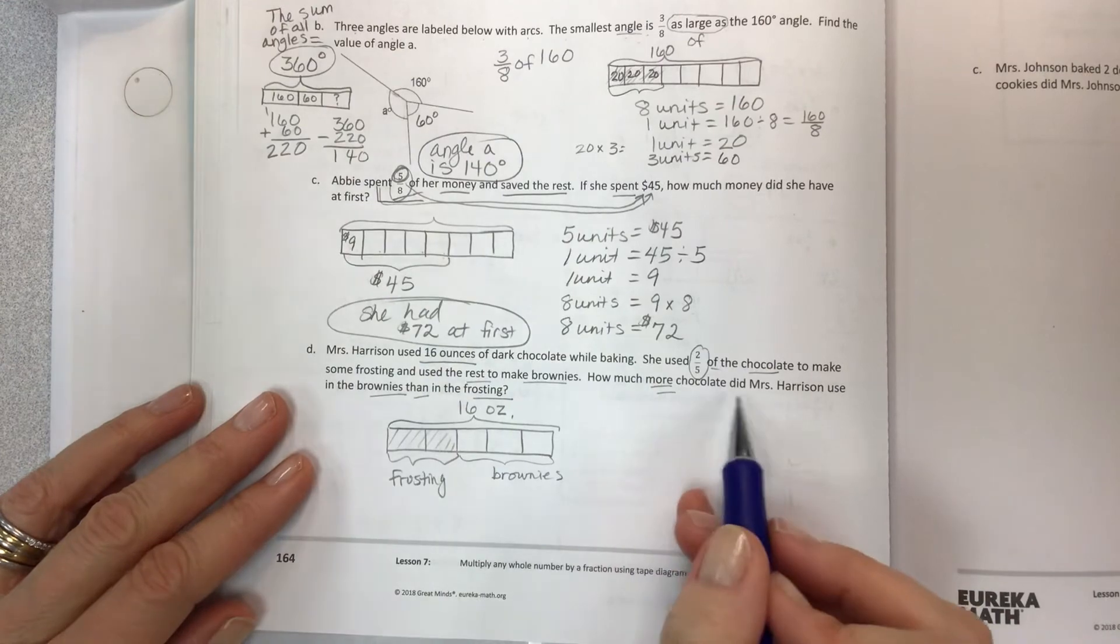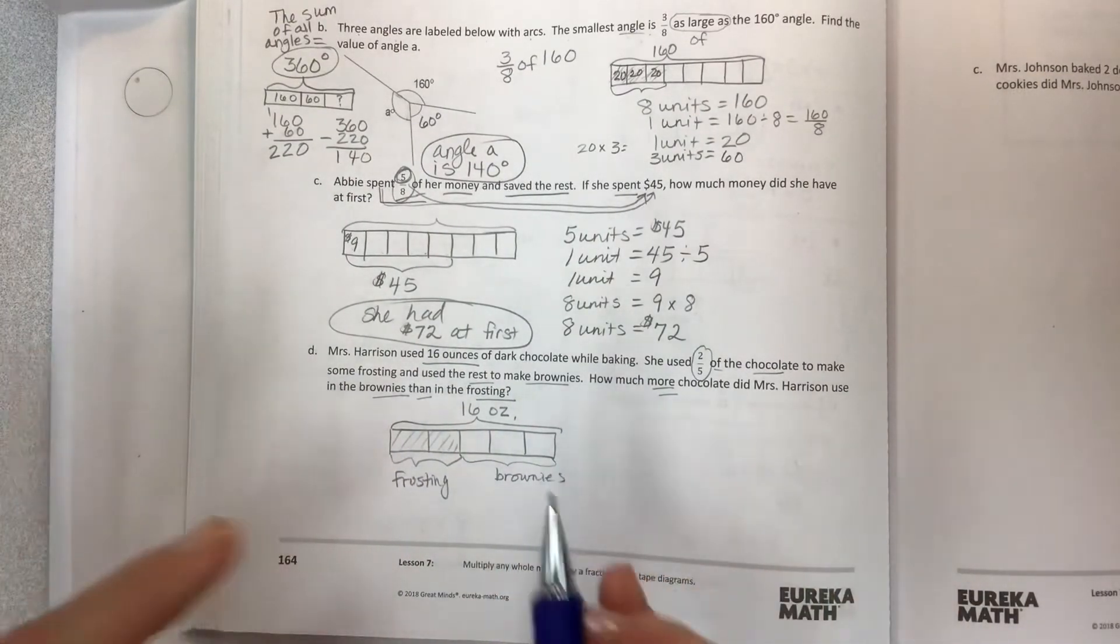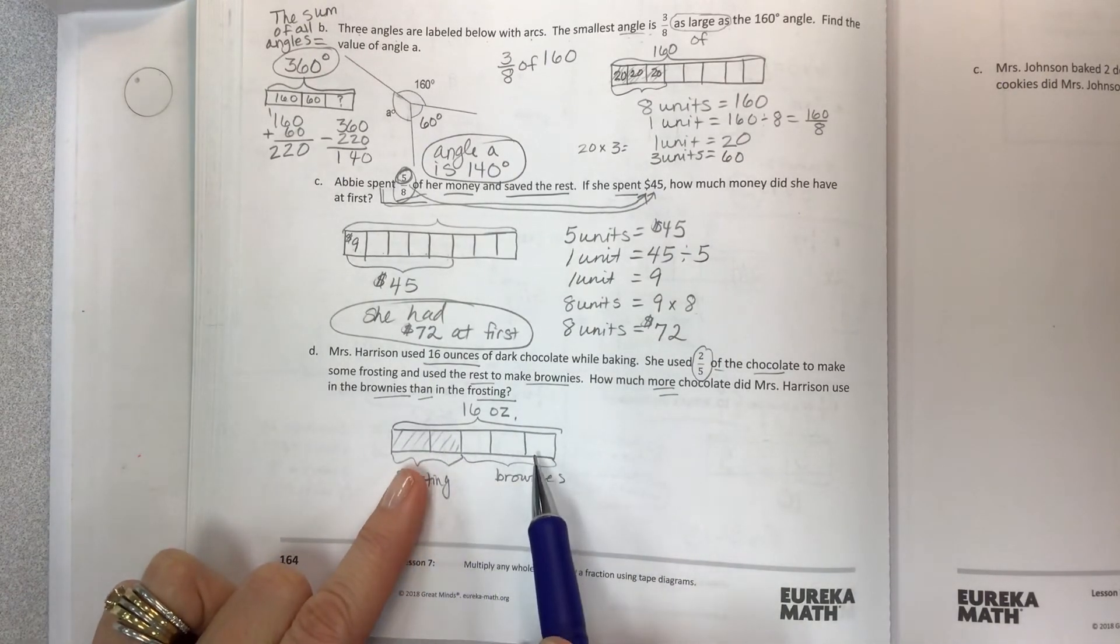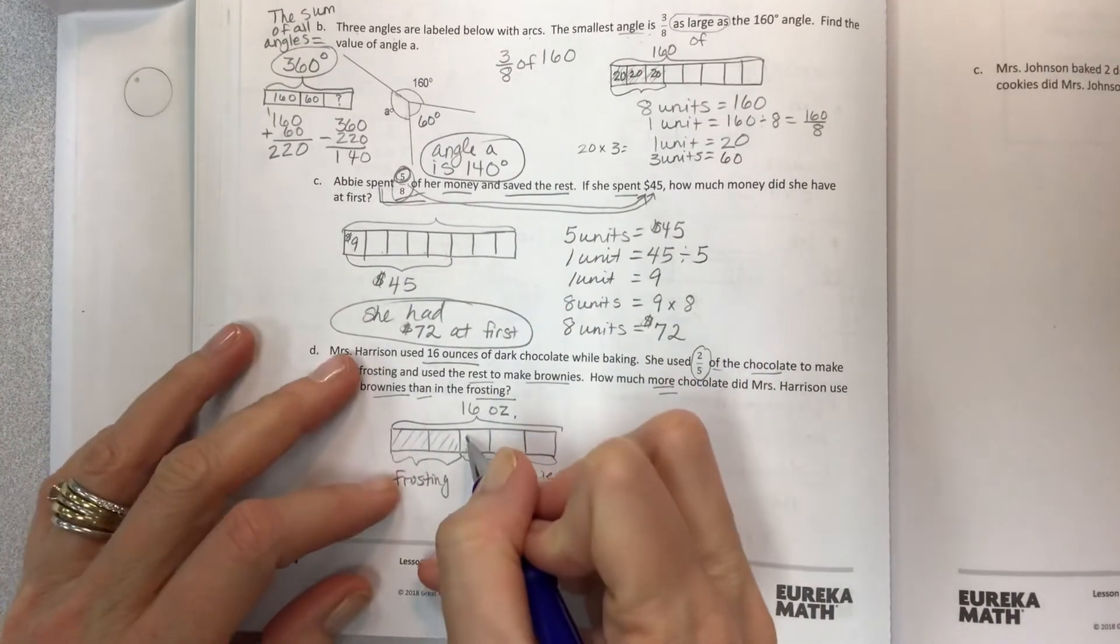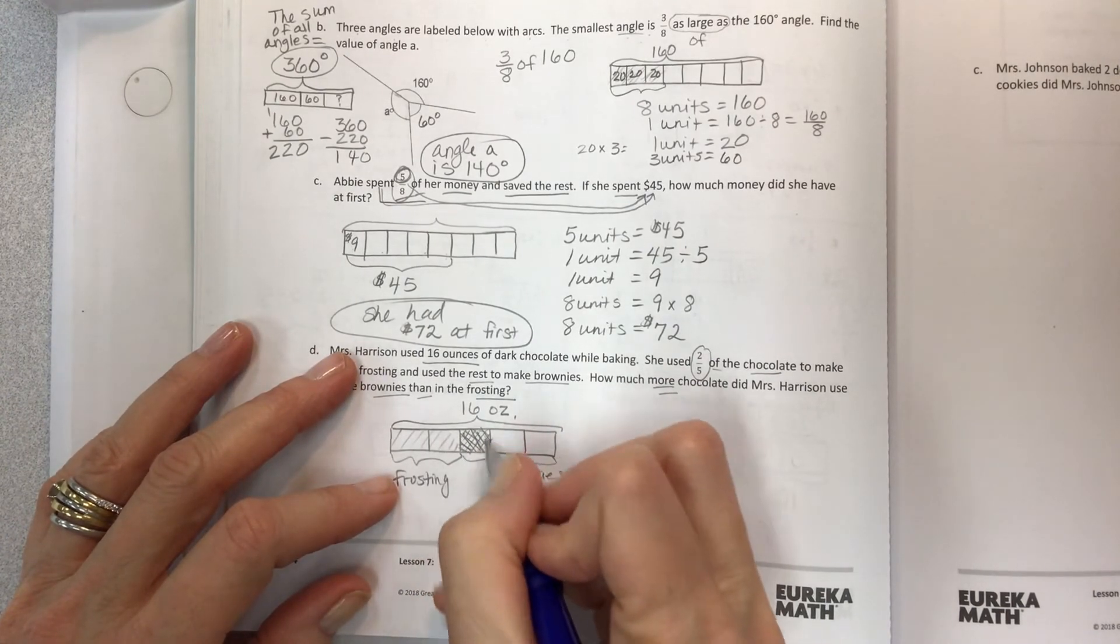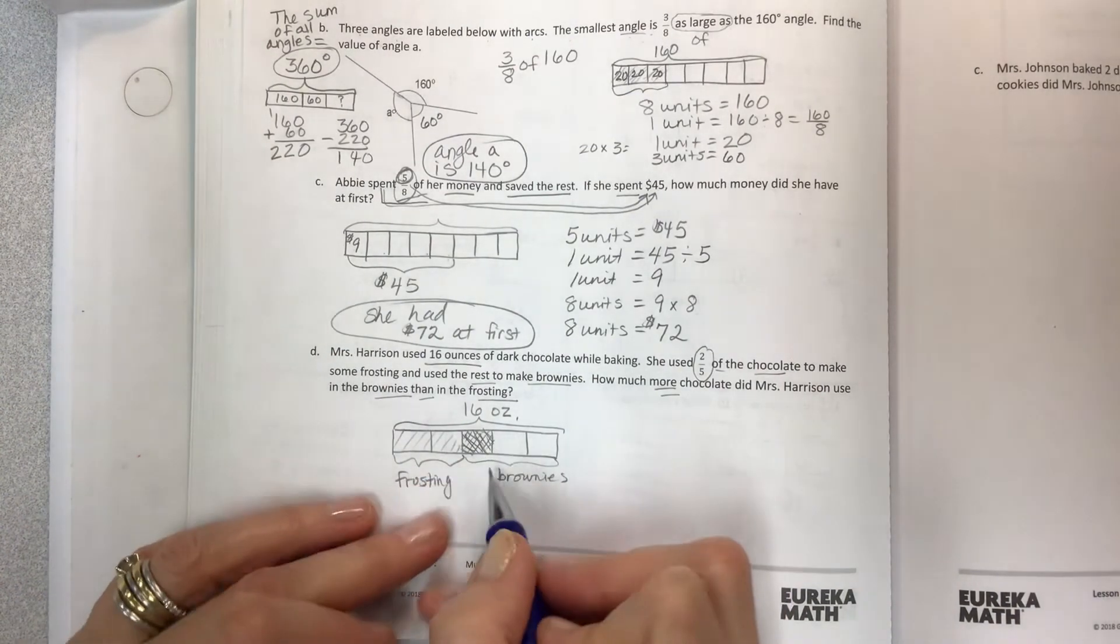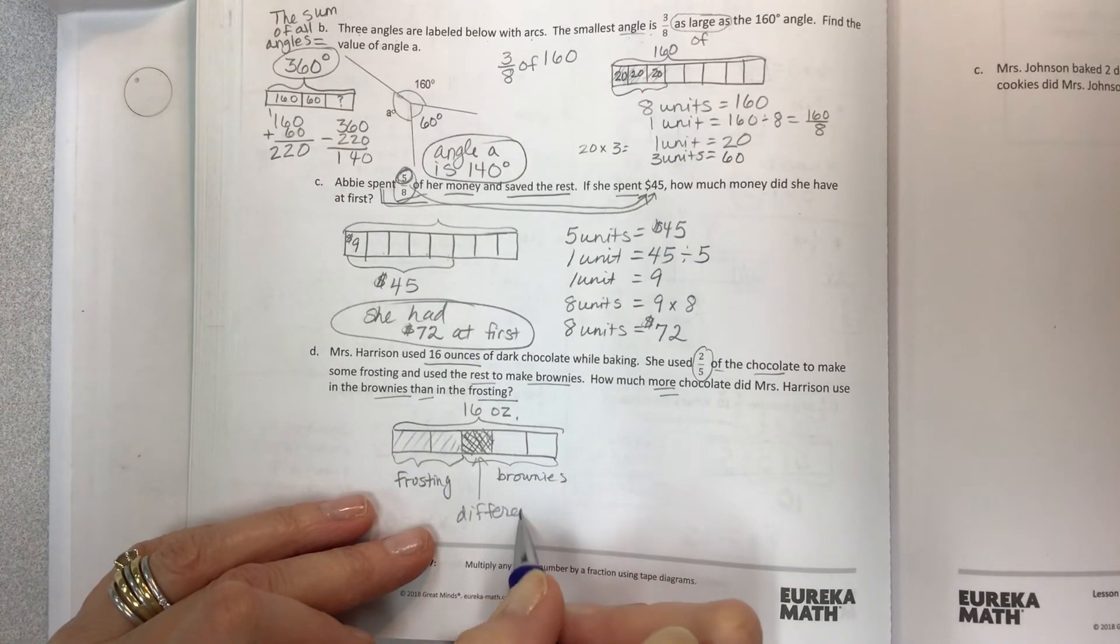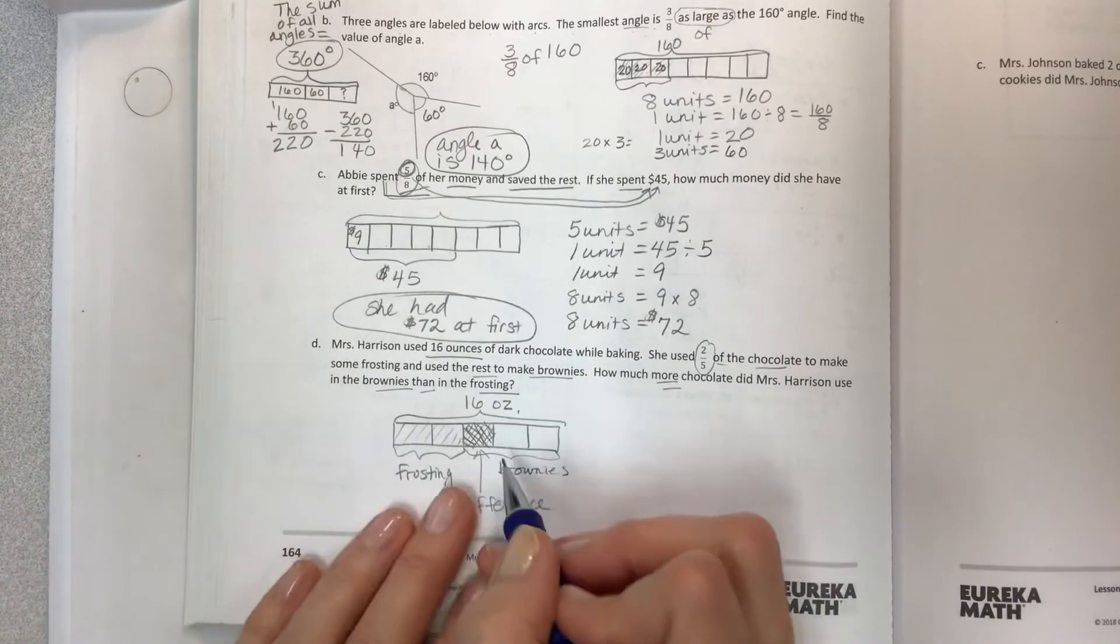How much more chocolate did Mrs. Harrison use in the brownies than the frosting? This is a comparison now. If you look at your tape diagram, you can see what's happening here. They're trying to say, if I've got this for this and I've got this for this, what is this here? That's the area that we need to be concerned with because that's the difference.